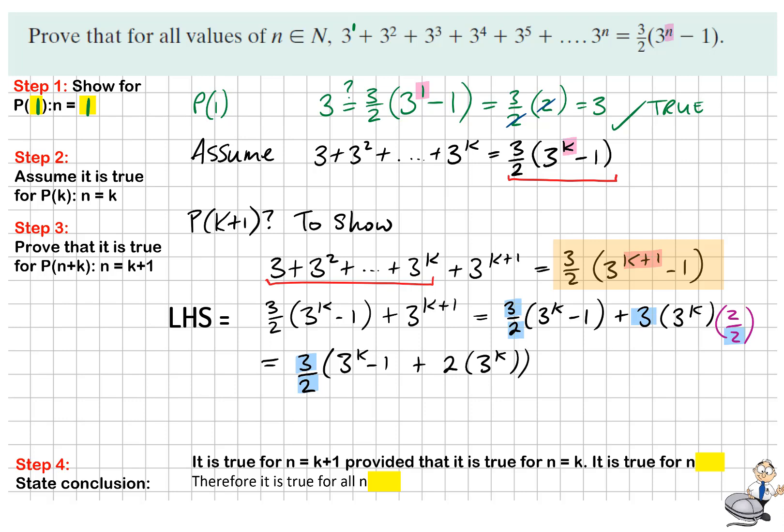We're almost there. You'll notice inside the brackets I have a 3^k and 2 lots of 3^k, so in total that's 3 lots of 3^k minus 1. We've always proven it at this stage. We're lastly just going to write out the answer. Because 3 lots of 3^k is the same as 3 to the power of k + 1. We've proven what we've set out to prove. So we've shown that the left hand side looked like the right hand side at the start.